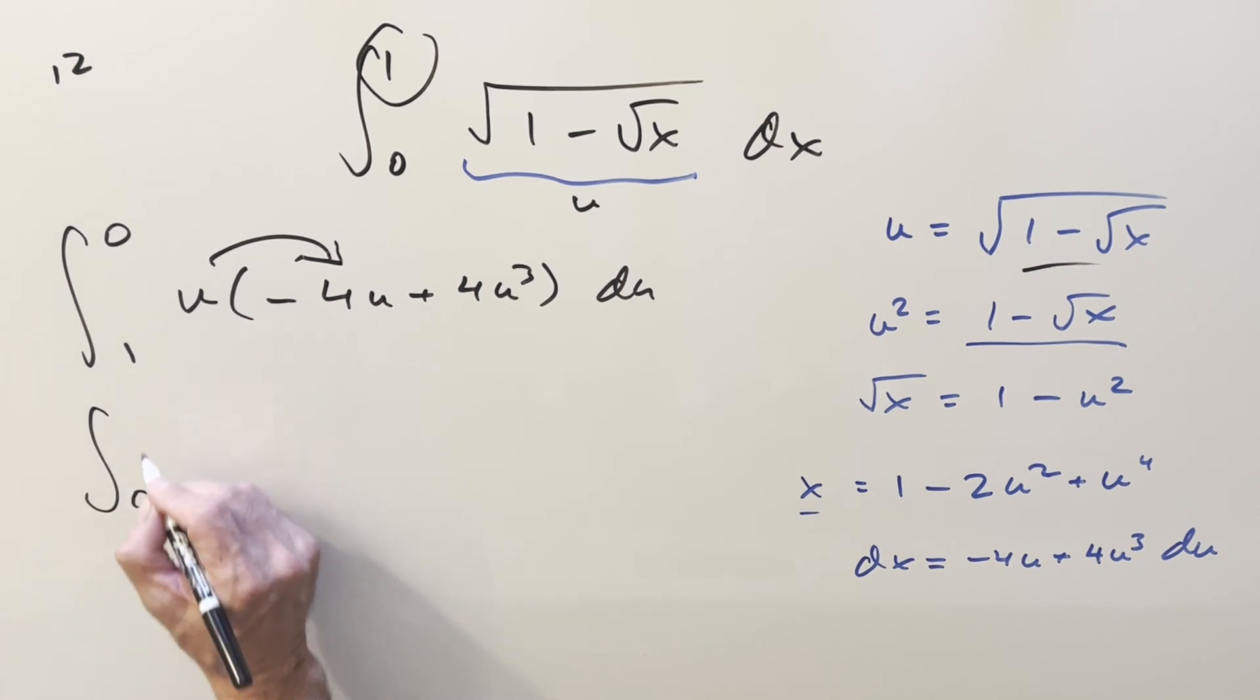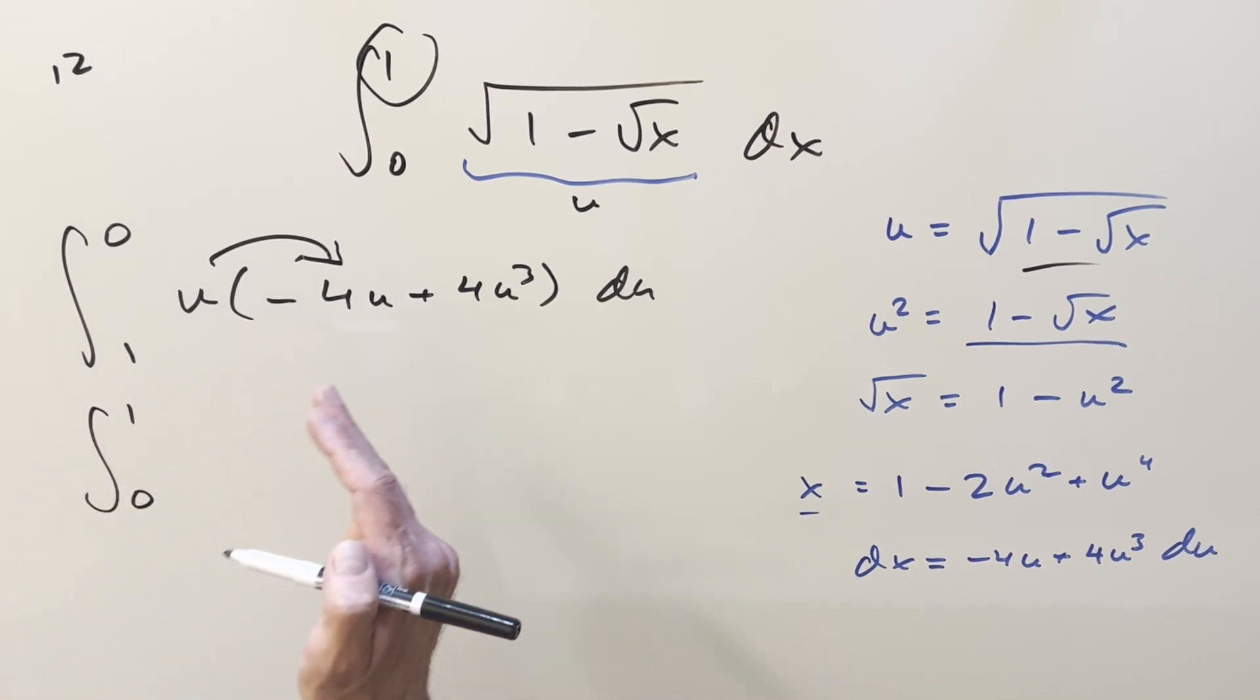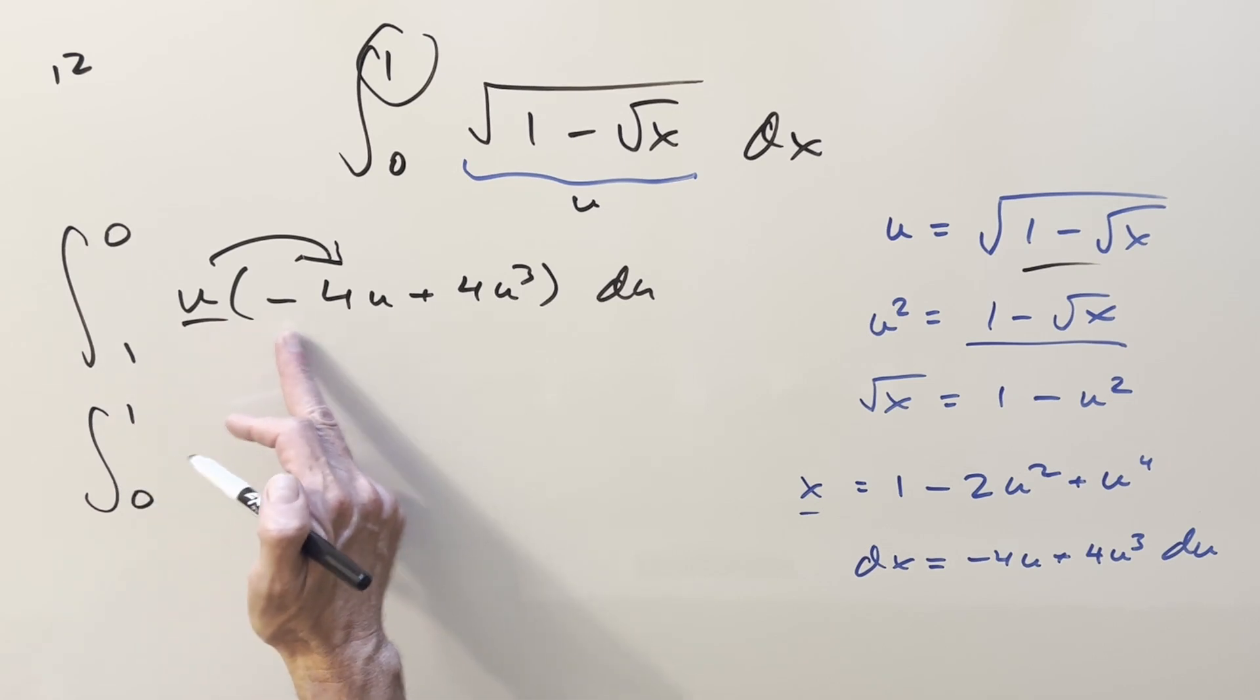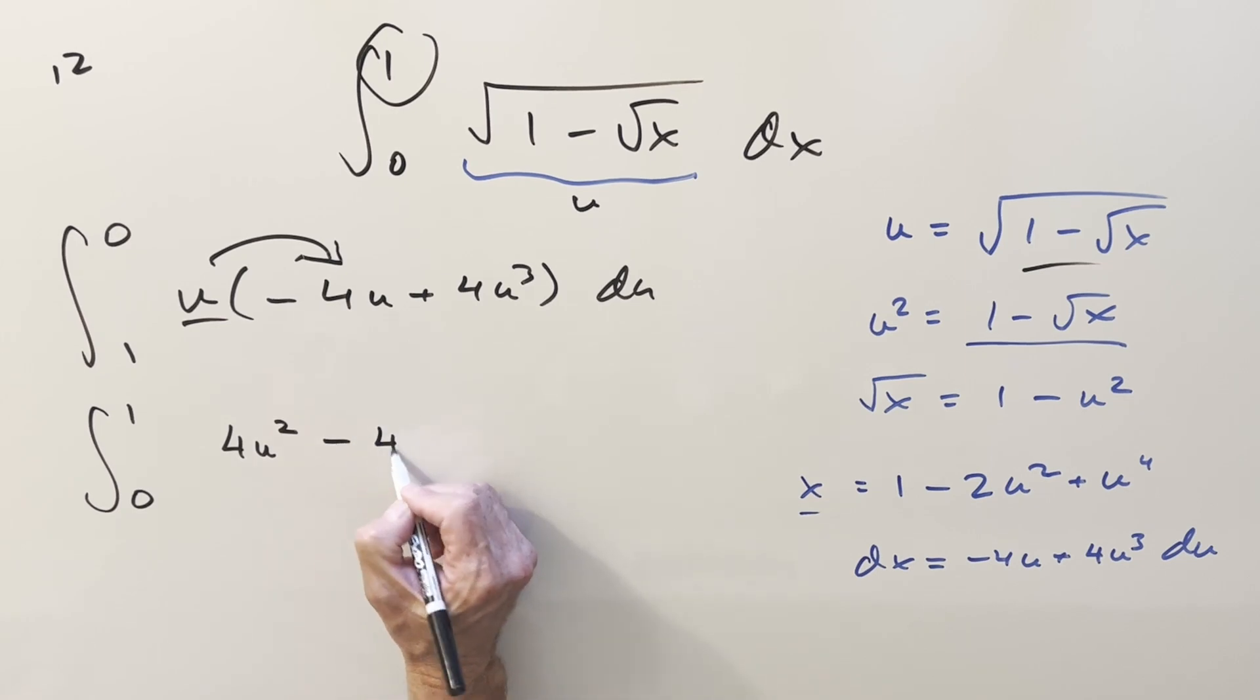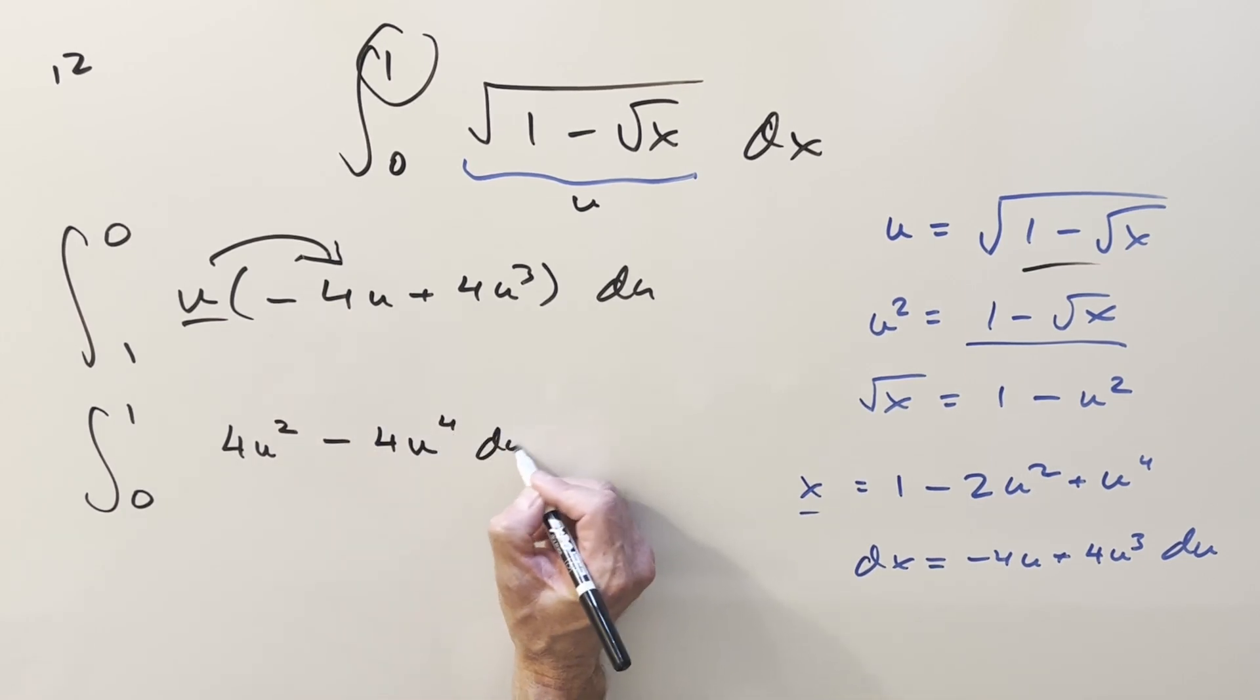So basically, if I reverse the bounds, that's like bringing a minus sign out front. We bring it back in. So what we're going to get is this part is going to be minus 4u squared. We reverse the sign, we get 4u squared, and then this is going to be minus 4u to the fourth du.